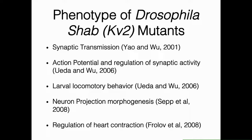There have been a number of previous studies describing the phenotype of Drosophila SHAB mutants. These mutations are mostly loss-of-function dominant negative mutations and have been shown to affect synaptic transmission, action potential regulation, larval locomotory behavior, and neuron projection morphogenesis.